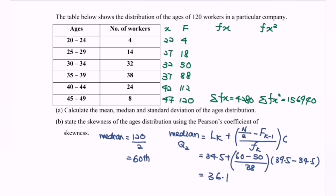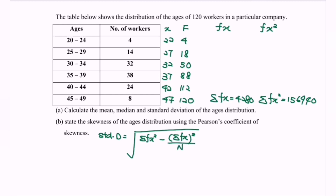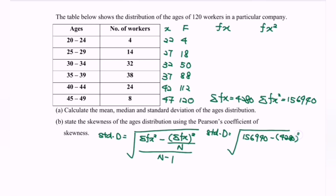Do remember, three significant figures. Next is to find the standard deviation. Using the formula: √[(ΣFx² − (ΣFx)²/n) / (n − 1)] = √[(156940 − 4280² / 120) / 119]. The standard deviation equals 6.001.